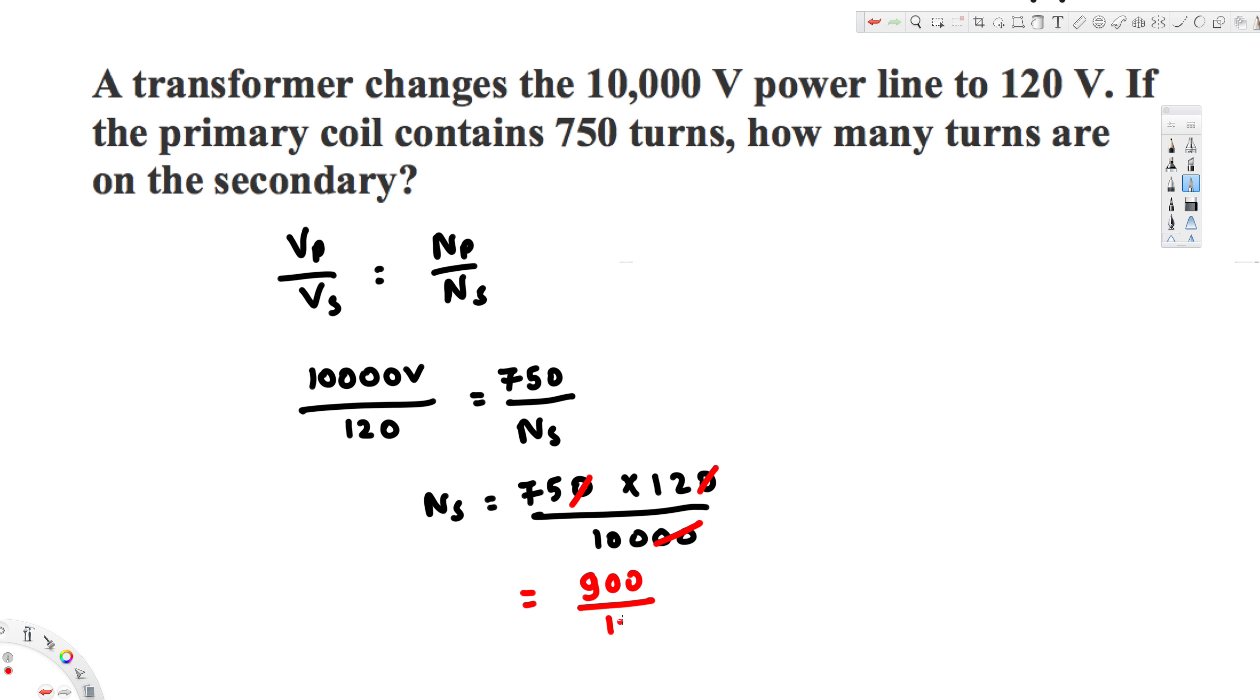900 divided by 100, that's going to give us 9. So we are going to have 9, 9 turns. That's going to be the secondary turns, and that's how we do this kind of problem. I hope this helps, thanks for watching.